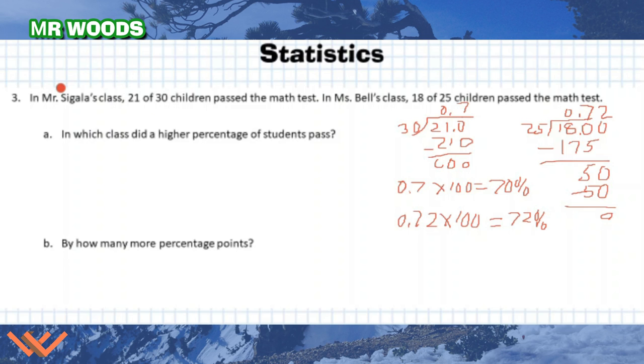So who had the highest passing rate? Did the highest percentage of students pass? Well, it looks like Ms. Bell's class had the higher percentage. So I'm going to say Ms. Bell. And by how many more percentage points? Well, 72 minus 70 is going to give me 2 percent. I'm going to say 2 percent.